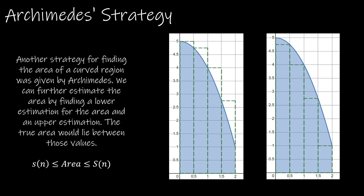Another related strategy is to take the area using the left endpoint and the area using the right endpoint of the interval, knowing that our area is going to be somewhere between those two values. So obviously this is the overestimation, considered S of N because it's the bigger estimation. If I use the right endpoint, that would be little s of N because I'm underestimating. So we can see that the real area is going to be somewhere between those two values.